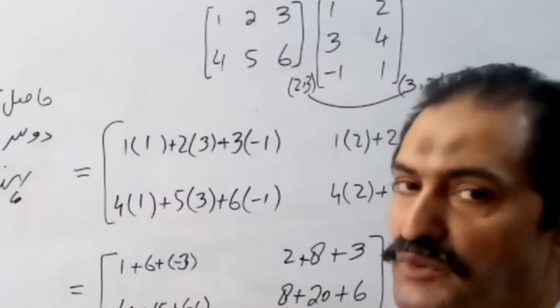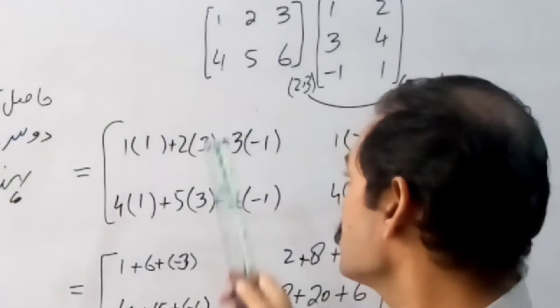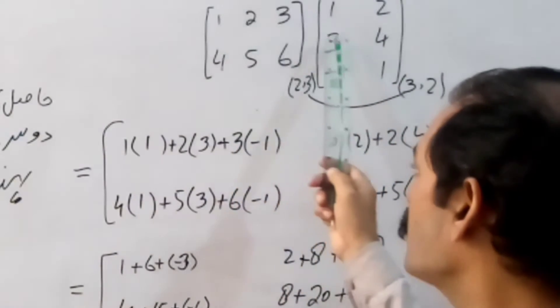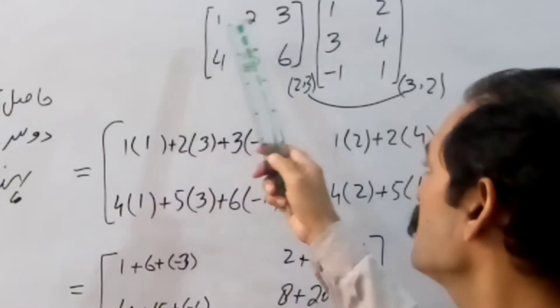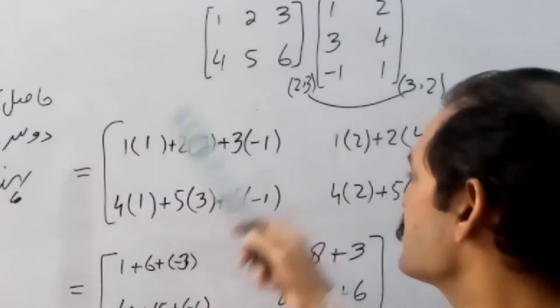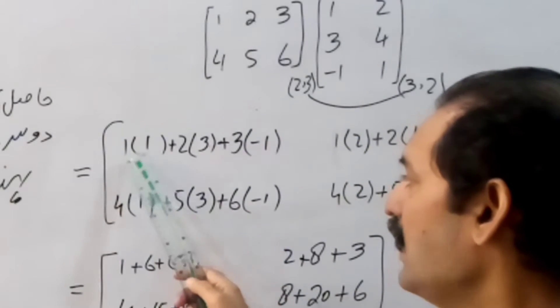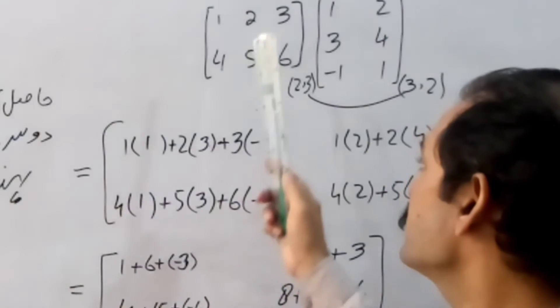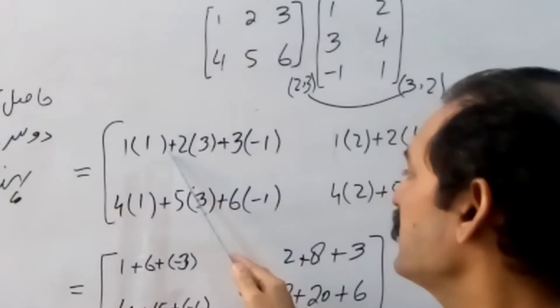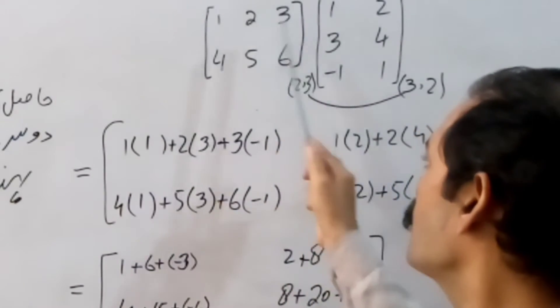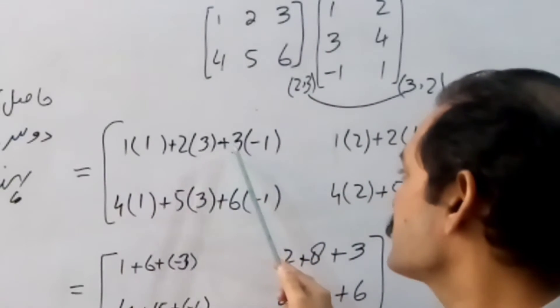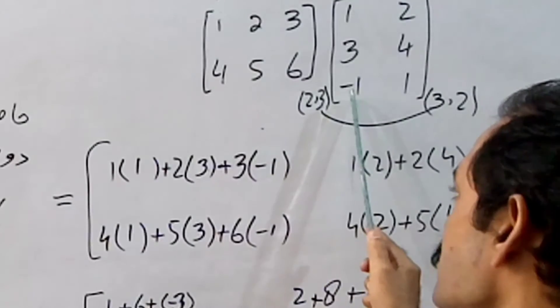The question is about the part. Go into the column. See, I have written it. This is the one. This is the one multiplied by one. We will add two into three. This is the two and this is the three. Plus three into minus one.